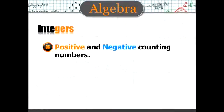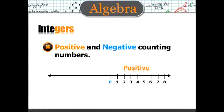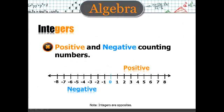Integers. Positive and negative counting numbers, and they are best illustrated on a number line. There are some positive, and here are some negatives. And always remember, integers are opposites.